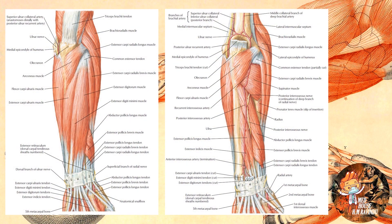Here you can see the brachioradialis muscle, extensor carpi radialis longus, and extensor carpi radialis brevis. Here you can see the extensor carpi ulnaris, extensor digitorum, and extensor digiti minimi muscles. In this picture you can see the supinator, abductor pollicis longus, extensor pollicis brevis, extensor pollicis longus, and extensor indicis muscles.